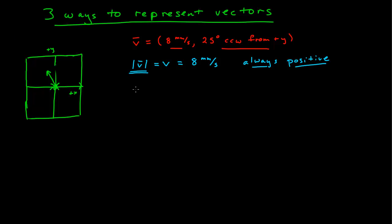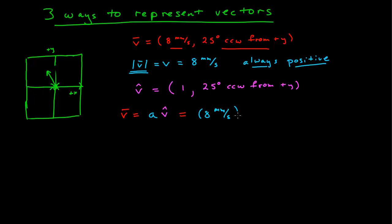If we want to identify the direction part, we can do that with a unit vector. The unit vector for this vector in descriptive notation is going to be 1 without any units, and then the direction: 25 degrees counterclockwise from the positive y axis. The vector is equal to the magnitude, which is a positive scalar, times the unit vector — which equals 8 millimeters per second times the direction 25 degrees counterclockwise from positive y — and we get our original vector back again.